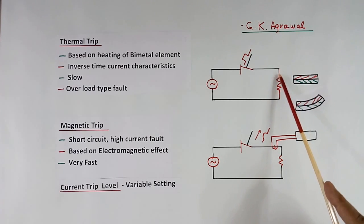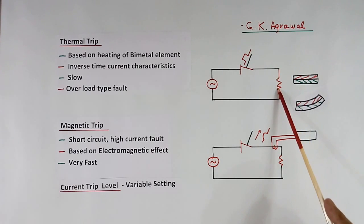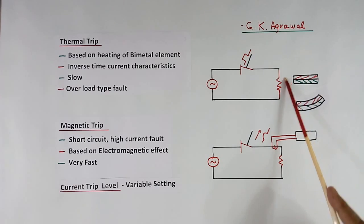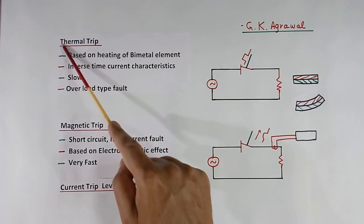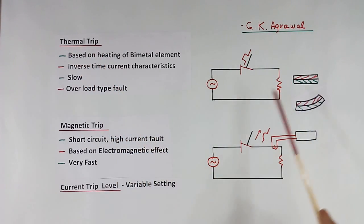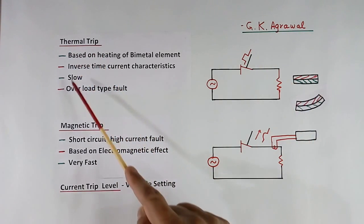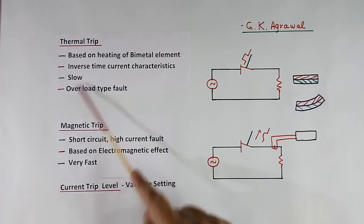Suppose here the normal maximum allowed current is 100 A and another 50 A comes. The thermal trip unit will operate, but it will take some time.